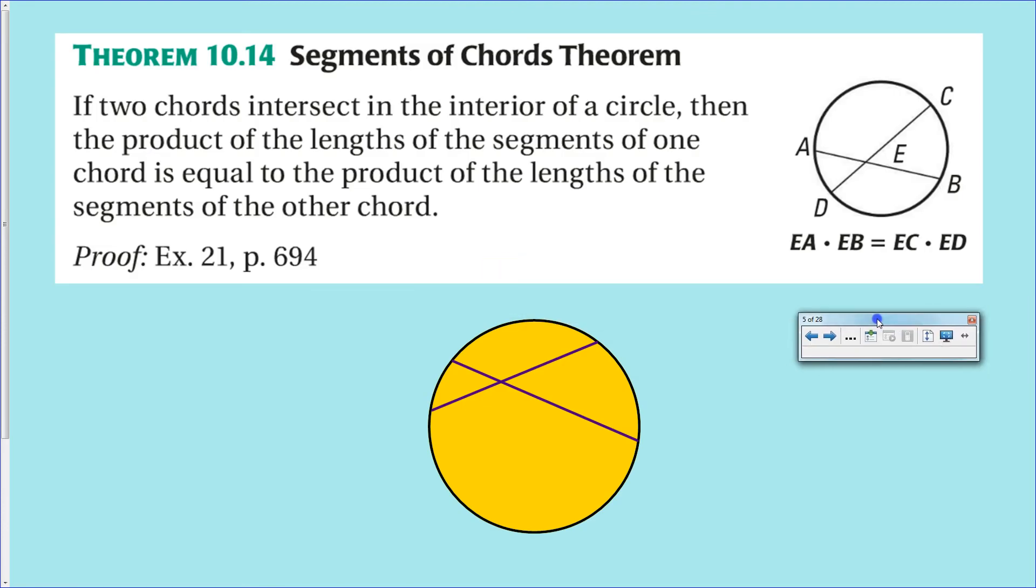Moving right along, let's go to the first example. This is theorem 10.14. This is the only situation where you have an intersection inside the circle.